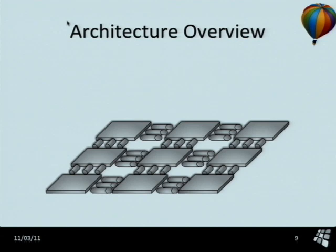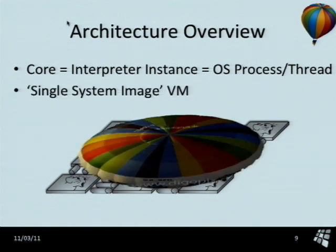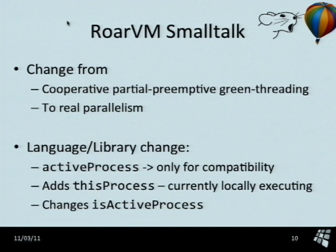The general idea is that we have an eight-by-eight core virtual machine hardware system, and we run one interpreter instance on each of these cores. On top of that, there's a whole single system image — a shared memory environment like in a standard Java multi-core system. When it comes to the language, there are not too many changes — only what is absolutely necessary. We are going from a cooperative and somewhat preemptive green threading scheme to a real parallel scheme. That's problematic for the usual standard libraries in Squeak, but at least for the image we are using, it turns out it's not much of a headache — it just works.